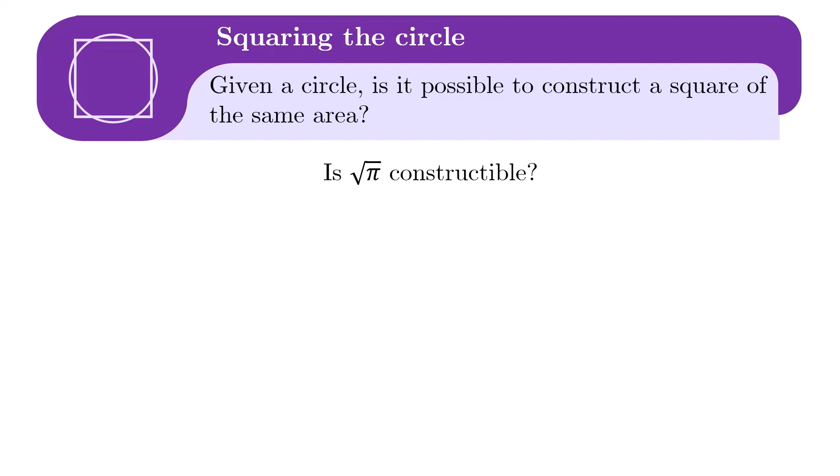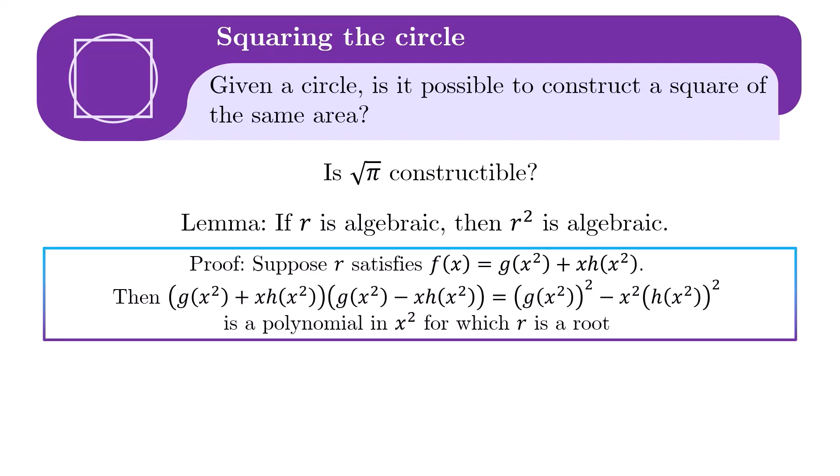Before proceeding further, we need a lemma which says that the square root of an algebraic number is also algebraic. The proof is quite clever. Suppose our algebraic number r satisfies the polynomial f as shown, where we split into the even-powered terms captured by g and the odd-powered terms captured by x times h. Then we can multiply f by a conjugate term as shown in the middle to get a polynomial in x-square, for which r is a root. And now we rename x-square as x, making r-square now the root of the constructed polynomial. So that proves the lemma.